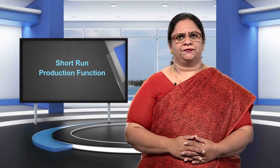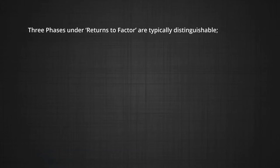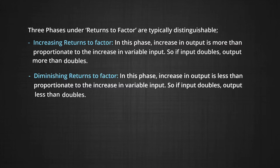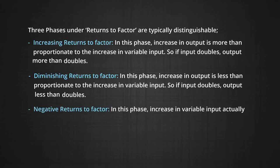How does output change when the variable factor is increased? This depends on returns to factor. Three phases under returns to factor are typically distinguishable. Increasing returns to factor exists when an increase in output is more than proportionate to the increase in input. In other words, if input doubles, output more than doubles. Diminishing returns to factor is said to exist when the increase in output is less than proportionate to the increase in input. In this case, if input doubles, output will less than double. Negative returns to factor exist when the increase in input actually causes the output to fall. We shall explain why these returns to factor exist in the next module.